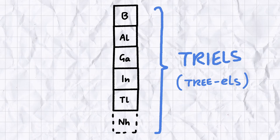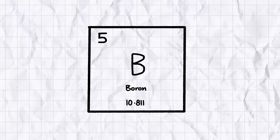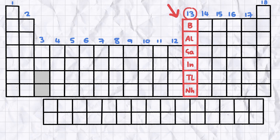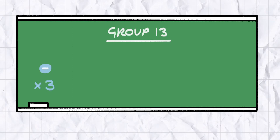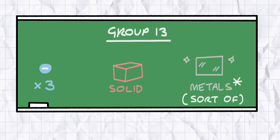Boron is the first member of Group 13. As in this bit, the 13th column, or group, of the table's top part. All of the elements in Group 13 share a few common characteristics. They all have three electrons in their outermost shells, they're all solids at room temperature, and they're all metals to an extent.